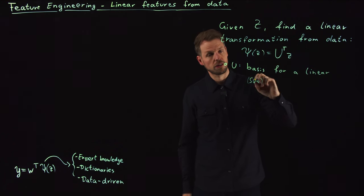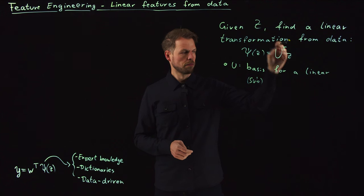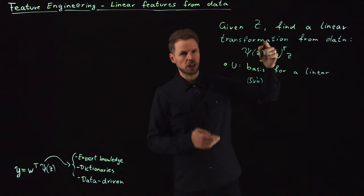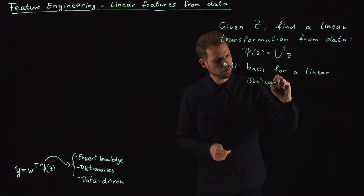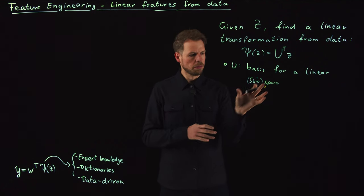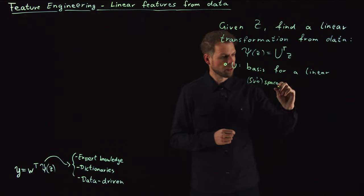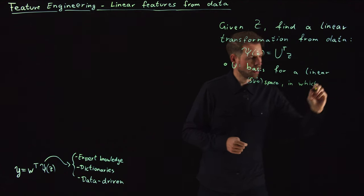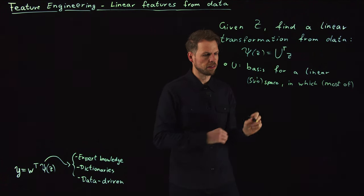If you take sufficiently many, it's just a basis transform. But if you take fewer than the q basis functions that you have in z, then it's a linear subspace. So we have a subspace where we lose some information, but hopefully not too much. It's a linear subspace in which, and now this is important, most of the data lives.